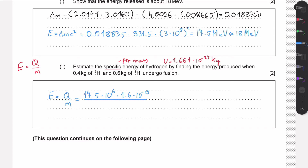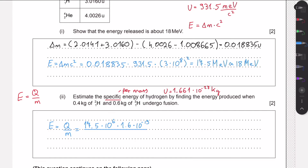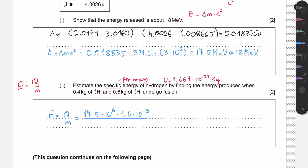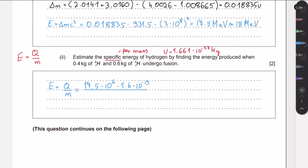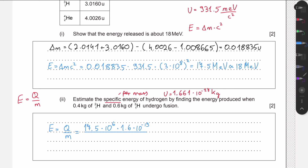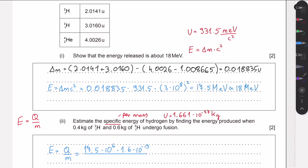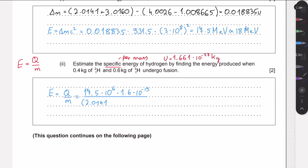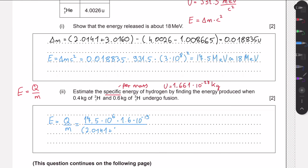The mass that produces this energy comes from one reaction involving the deuterium (mass 2.0141 u) and the tritium (mass 3.0160 u). We convert this total mass from atomic mass units to kilograms by multiplying by 1.661 times 10 to the minus 27. Doing this full calculation gives a specific energy of 3.40 times 10 to the 14 joules per kilogram.